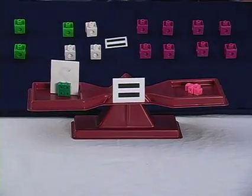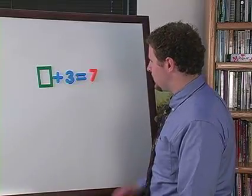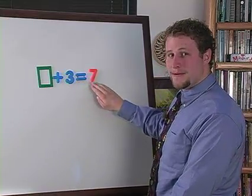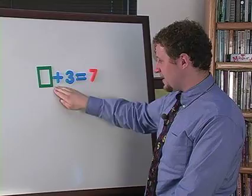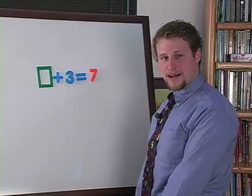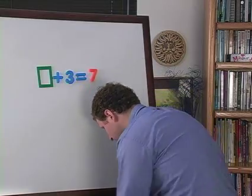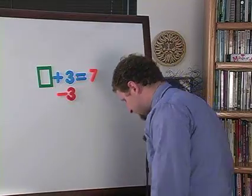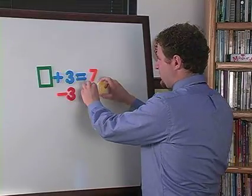Now that I've solved this problem on the balance, I can do it on the board. So I have box plus 3 is equal to 7. And I want to find out what's inside of the box. Well how did I do it on the balance? I just took away 3 from each side. So I have 3 minus 3, which is equal to 0.